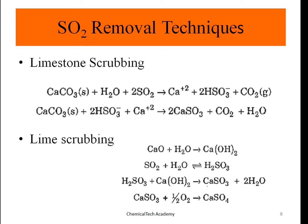For SO2 removal techniques after burning, we can use limestone scrubbing or lime scrubbing. Limestone is CaCO3 (calcium carbonate); when it reacts with SO2 it produces HSO3, scrubbing it by mixing with water to remove it. Lime scrubbing uses CaO (calcium oxide); mixed with water it produces Ca(OH)2, which, being an alkaline solution, reacts with sulfurous acid to produce CaSO3 — a harmless salt — and water. These are the two main techniques to remove SO2 after combustion.